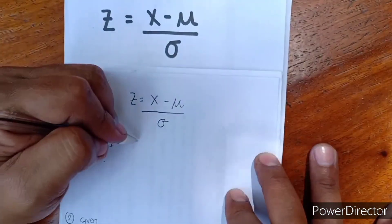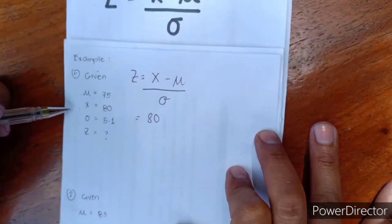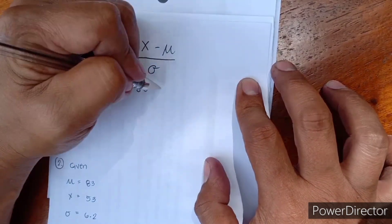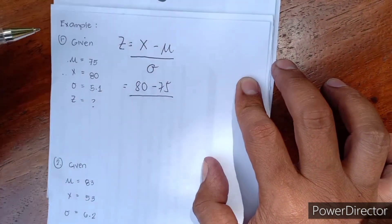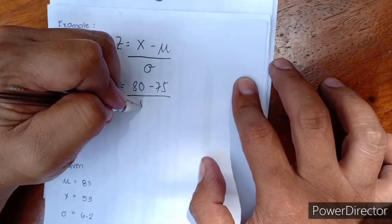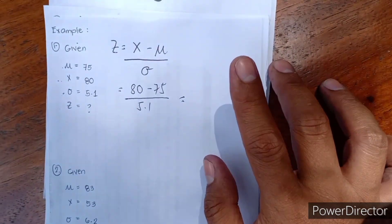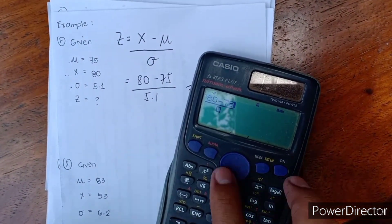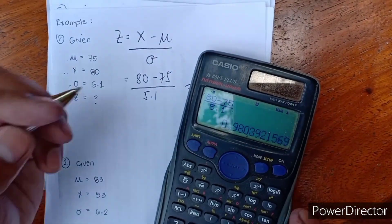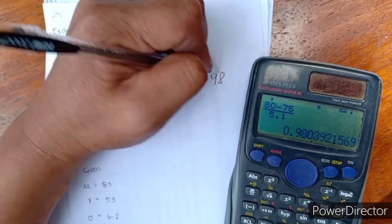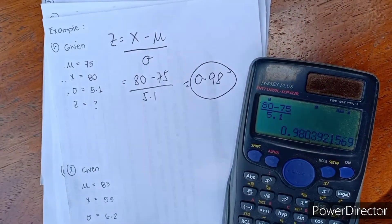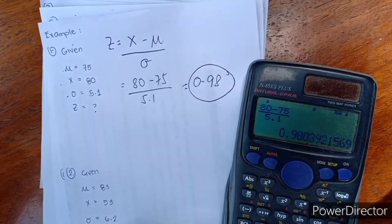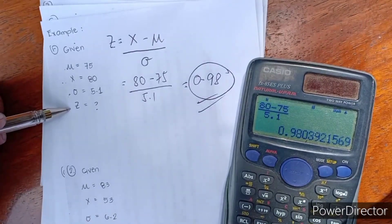Let's substitute the given. Our raw score is equal to 80 — raw score, or we can also say real score — minus the mean, which is 75, divided by our standard deviation, which is 5.1. Using our calculator: 80 minus 75 all over 5.1 is equal to 0.98. Take note that for this topic, we will consider two digits right after the decimal point. So our Z is 0.98.